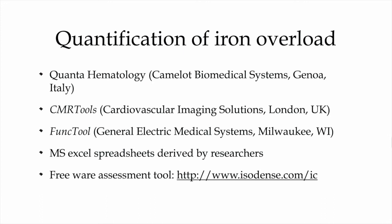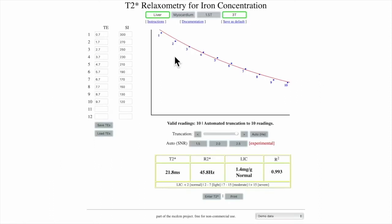For quantification of iron overload, multiple software options are available, including Quanta Hematology, CMR Tools, and FuncTool. There are also Excel spreadsheets derived by researchers and freeware tools easily available on the internet.